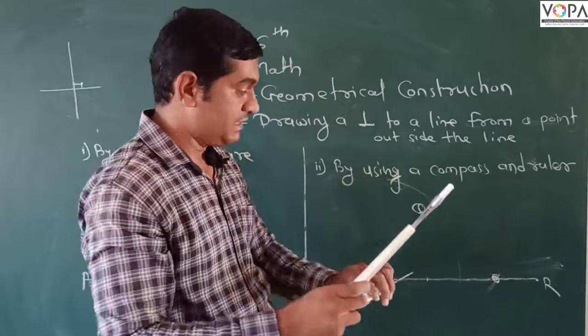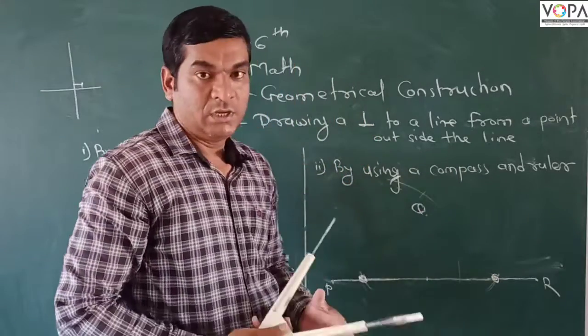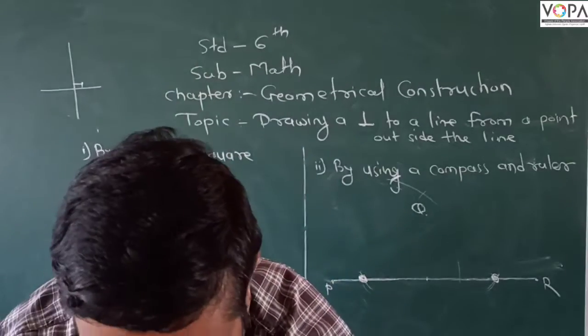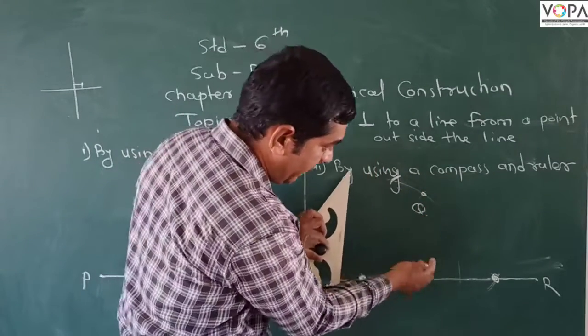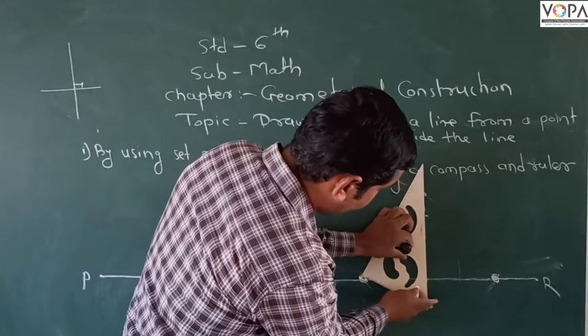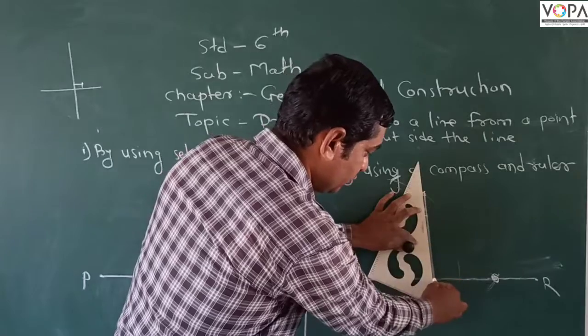Don't change the distance. With the same distance, take this point and make an arc here also. So we are getting this point from these arcs and the point Q. These two points will form a line.